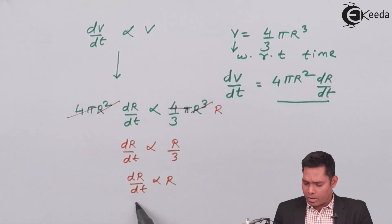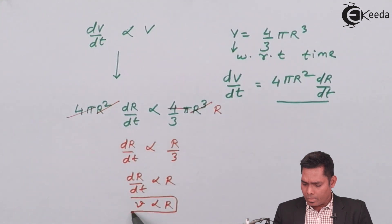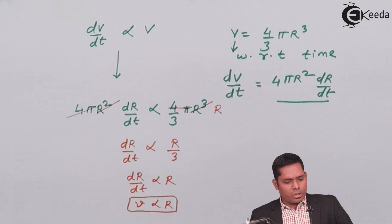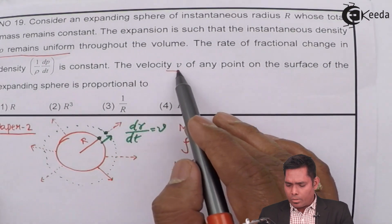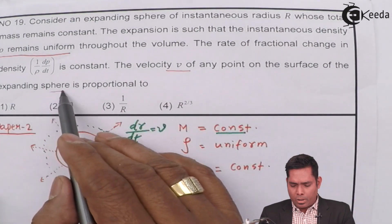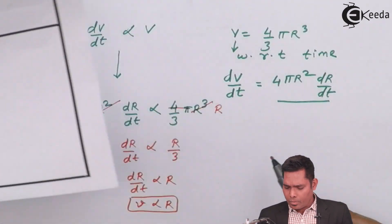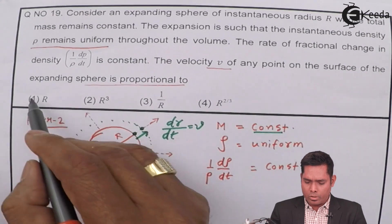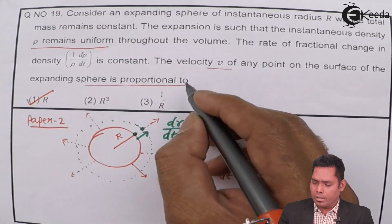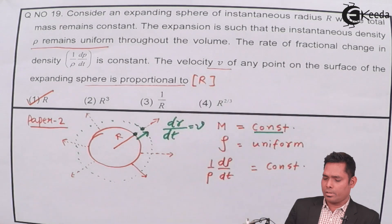Since dR/dt is the velocity of a point on the surface, we conclude that velocity is proportional to R. So the answer is that velocity is proportional to R.